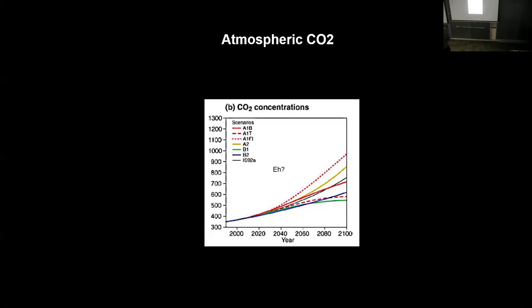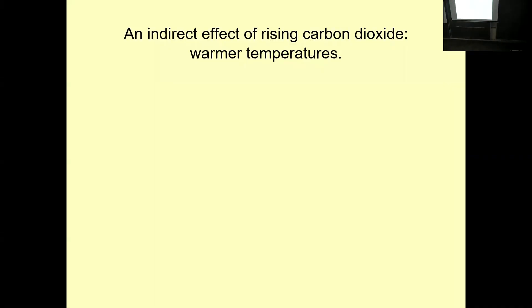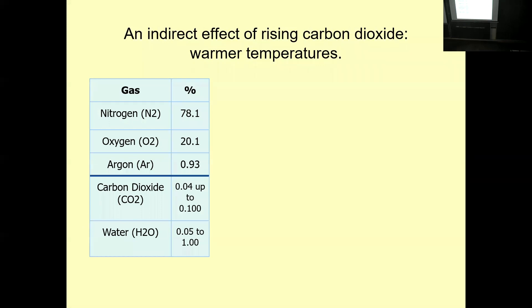So the question I often get asked is: who gives a flying fig whether or not carbon dioxide is 300 or 400 or 500 or 800 parts per million? What difference does that make? Well, the major difference is an indirect effect due to warmer temperatures. If you look at the overall composition of the air, you see all the major gases, but then you see two that are very important even though they're in small quantities, and those are considered to be global warming gases.